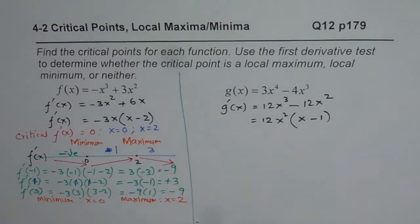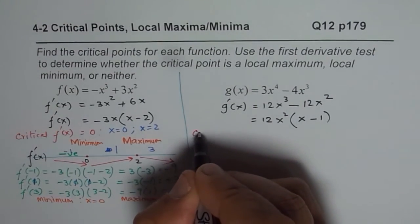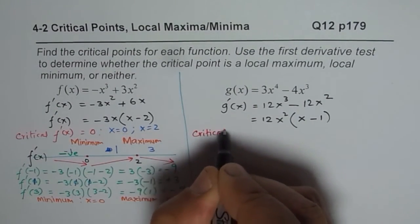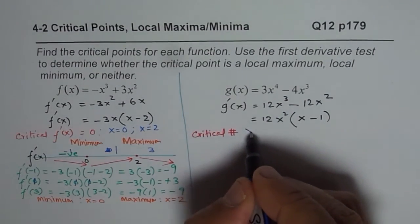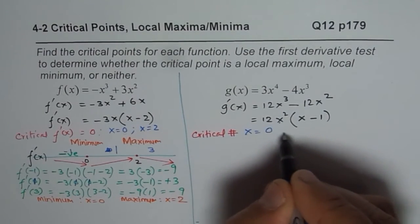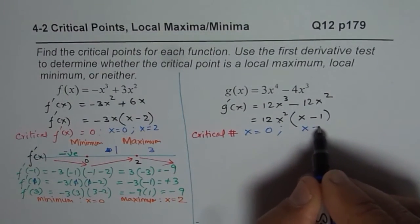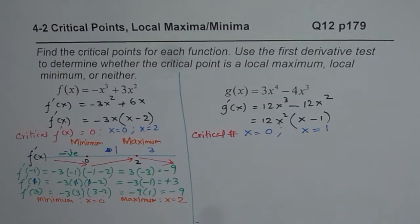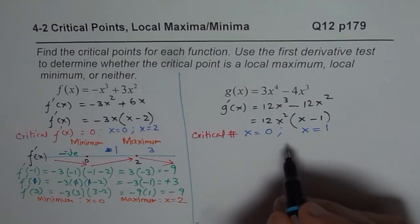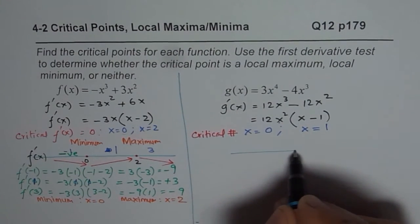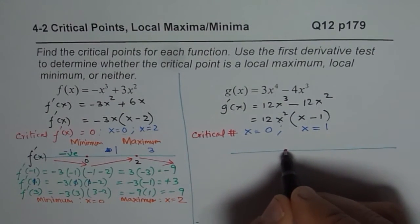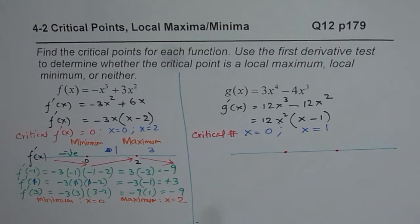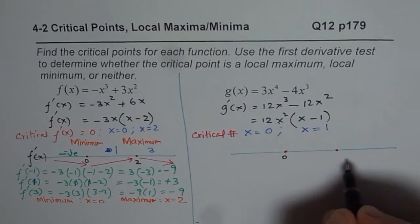The critical numbers are found by setting the derivative to zero. Note that critical numbers are only the x values, not the y values. We get x equals 0 and x equals 1 as the two critical numbers. We now need to test whether at these critical numbers we have a maximum, minimum, or neither.